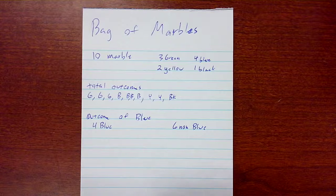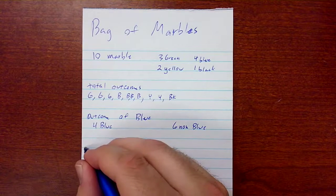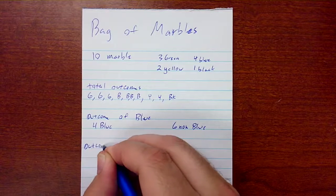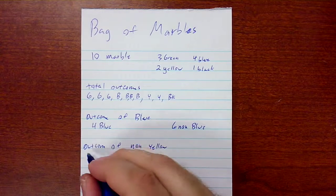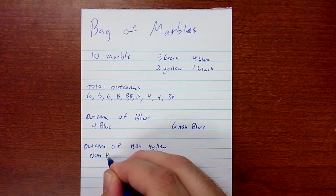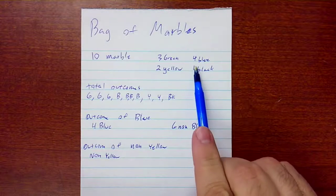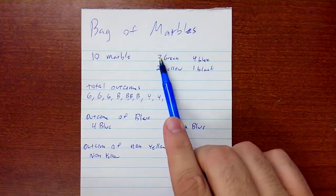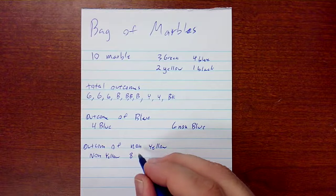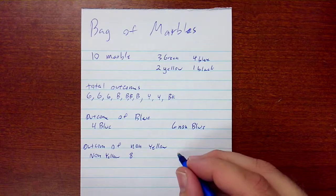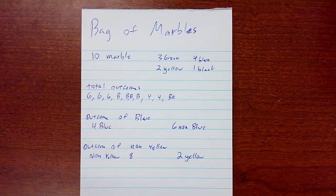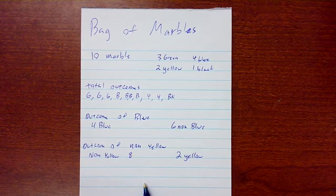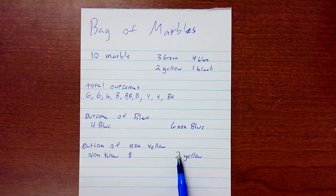Now let's look at something a little different. What if we're looking for an outcome of non-yellow? We have one black, four blue, three green — so we have eight possible favorable outcomes for non-yellow. Our non-favorable would be the two yellow marbles. So if we're looking at non-yellow, we're asking what is the probability we're not going to draw a yellow marble. That would be eight over ten, whereas the probability of drawing a yellow would be two over ten.